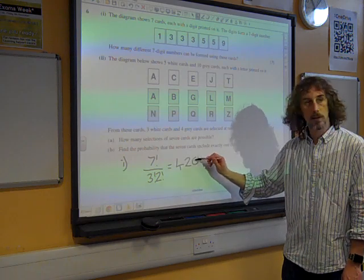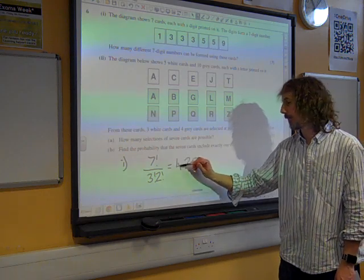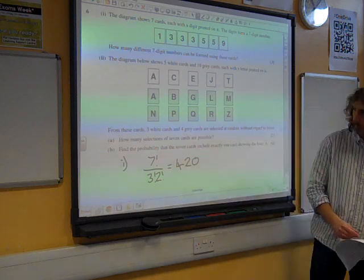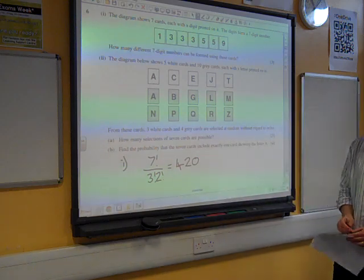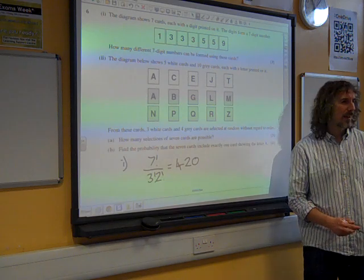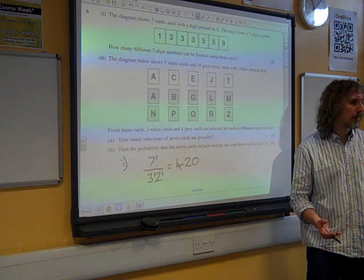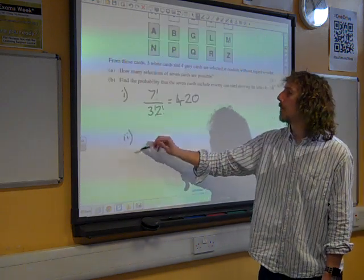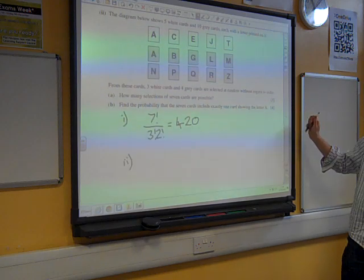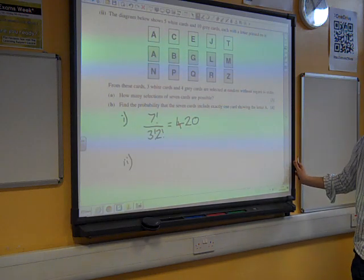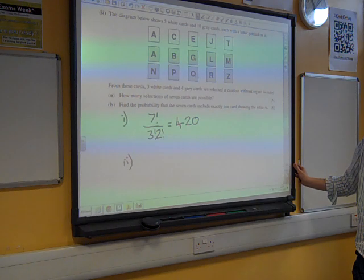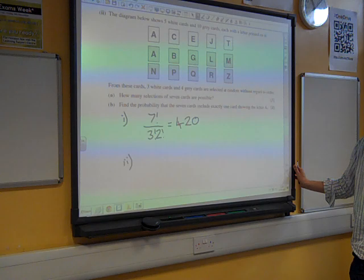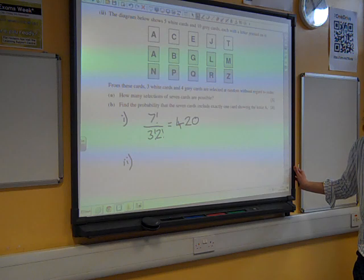Did you do it in your head? No, I had it ready earlier. There we go, 420. That's quite a nice start. Are we happy with that? Now, the question gets a little bit more interesting. The diagram shows five white cards and ten grey cards, each with a letter printed on it. From these cards, three white cards and four grey cards are selected at random without regard to order. How many selections of seven cards are possible?